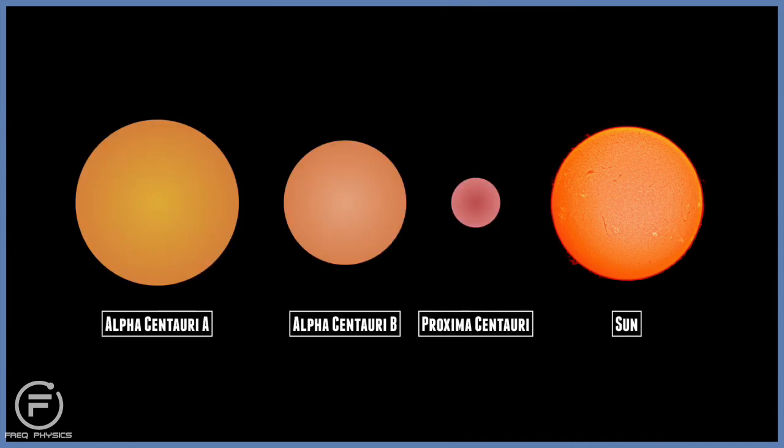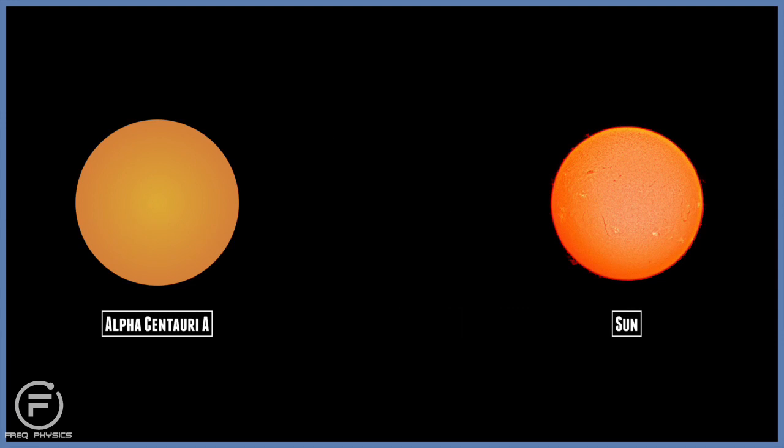The star system that is closer to the Sun consists of three stars, and the brightest of these stars is Alpha Centauri. Light from Alpha Centauri takes more than four years to reach the Sun. So this means that Alpha Centauri is just over four light years away from our star.